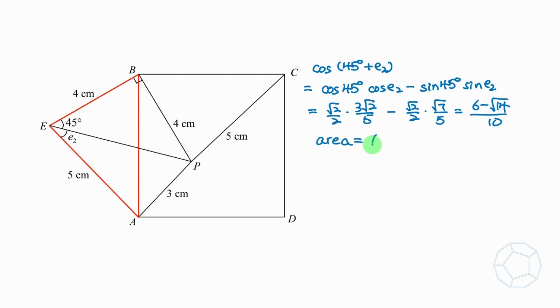Finally, the area of square is equal to the length AB square. By cosine formula, this is equal to 5 square plus 4 square minus 2 times 5 times 4 cosine 45 degrees plus E2. So this is equal to 25 plus 16 minus 40 times 6 minus root 14 over 10. So the answer is equal to 17 plus 4 root 14 square cm.